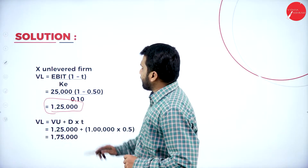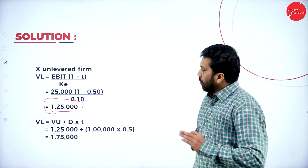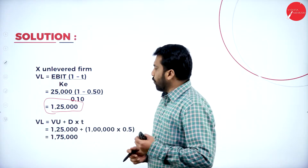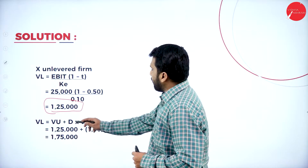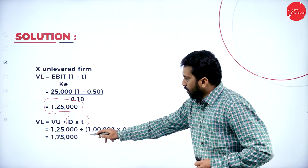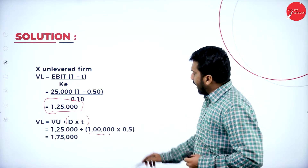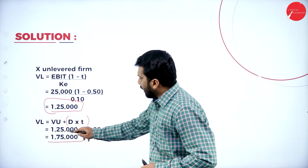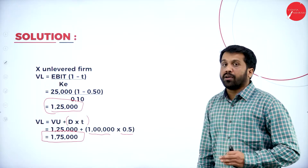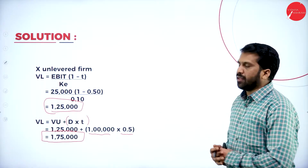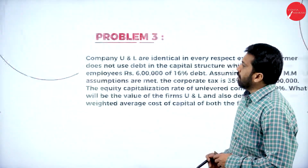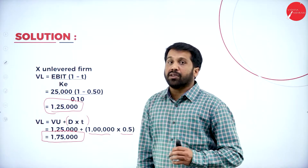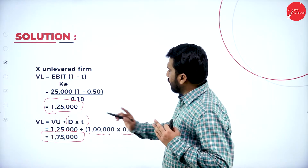For the levered firm Y, we use: VL = VU + D × T. VU is 1,25,000. The debenture value D is 1,00,000 and the tax rate T is 0.5. So VL = 1,25,000 + (1,00,000 × 0.5) = 1,25,000 + 50,000 = 1,75,000. So the unlevered firm X has a value of 1,25,000 and the levered firm Y has a value of 1,75,000. The difference arises because firm Y has debentures.